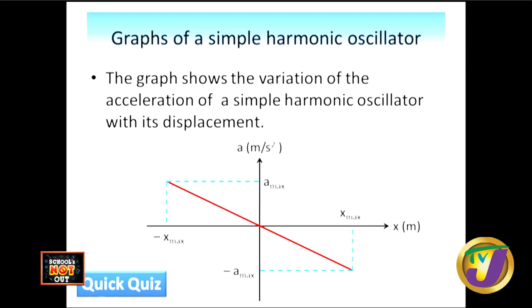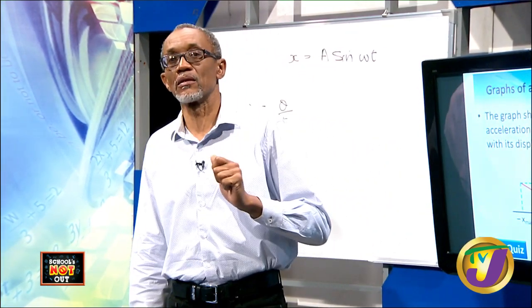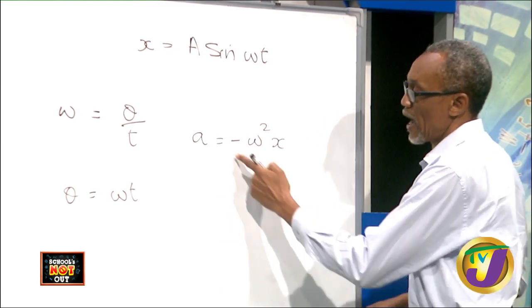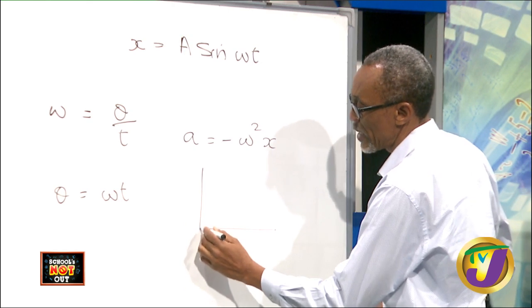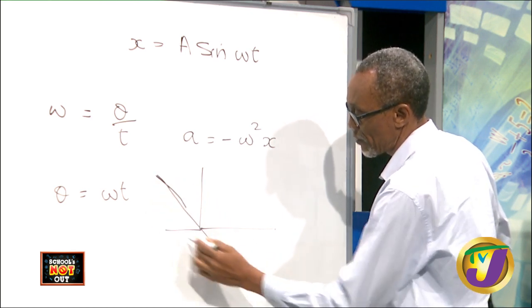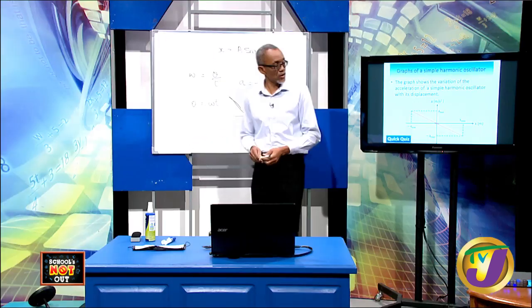Now we look at the acceleration against displacement graph for a simple harmonic oscillator. If we plot a graph of acceleration versus displacement, since acceleration equals −ω²x, the graph is a straight line with a negative gradient. This is consistent with what we have seen: the acceleration and displacement are always in opposite directions.